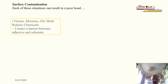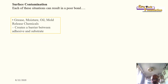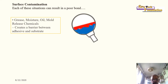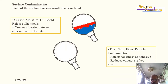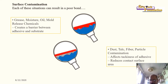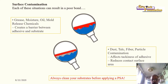Surface contamination can result in poor bonding. Grease, moisture, oil, and mold release chemicals create a barrier between adhesive and substrate. Dust, talc, and fiber particle contamination affect tackiness and reduce contact surface area because dust fills the valleys of the substrate. Always clean your substrate before applying a PSA.